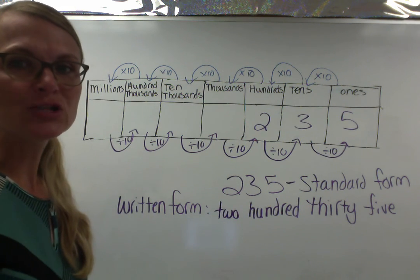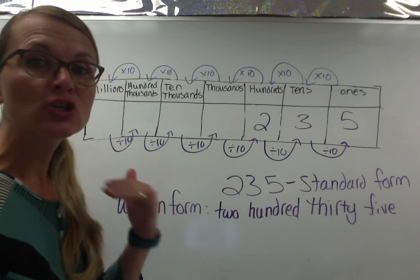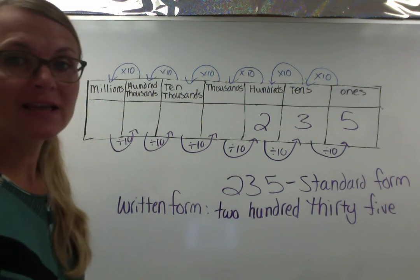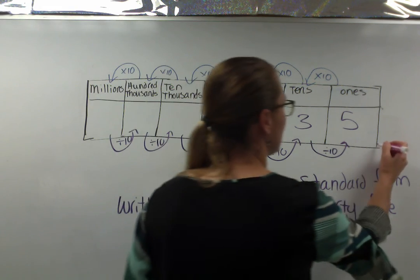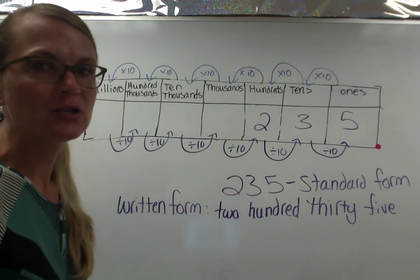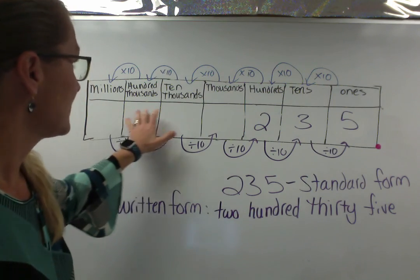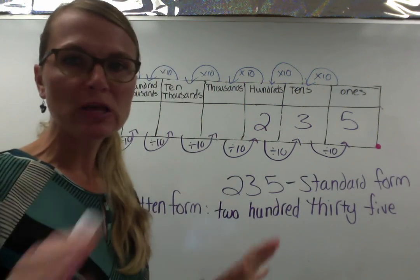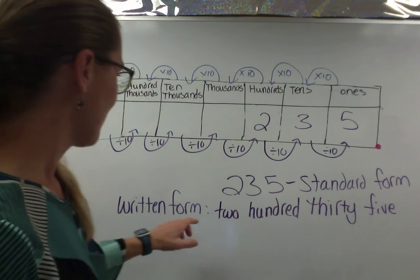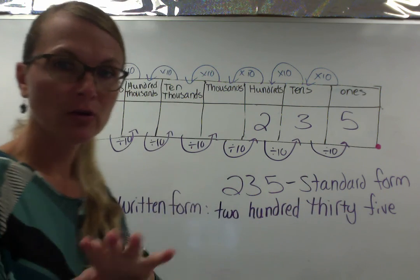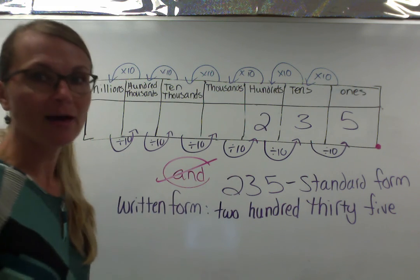In the written form, you'll notice I do not use the word and. We do not say 235. We say 235. There's a reason we don't say the and, because in math, when you say the and, that is the decimal point. And the decimal point goes after the ones place. You'd say 235 and five tenths. So if you are saying a number that does not have a decimal, you do not use the word and when you write it and you should not use the word and when you say it. So it's 235 or you write it out 235. No and. That will come later.